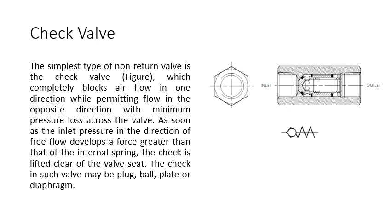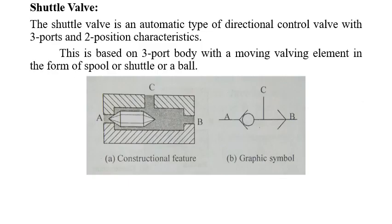The check valve has a spring-loaded moving component that allows fluid to flow in only one direction, completely blocking air flow in the other direction while permitting flow in the opposite direction with minimum pressure loss across the valve. As soon as the inlet pressure in the direction of free flow develops a force greater than the internal spring, the check is lifted clear of the valve seat. The check in such valves may be a plug, ball, plate, or diaphragm type.